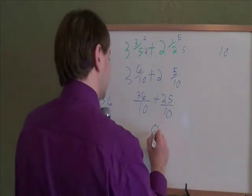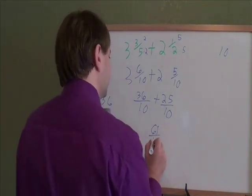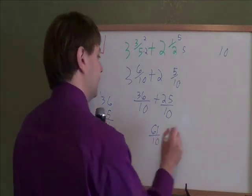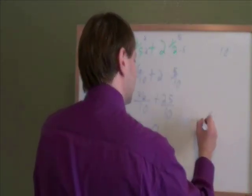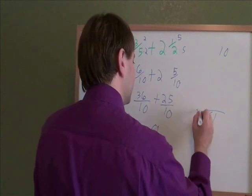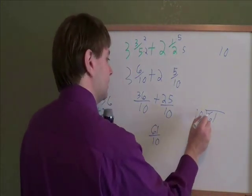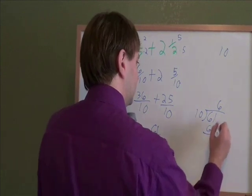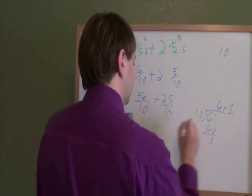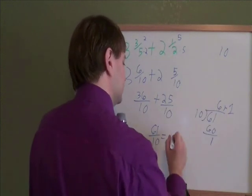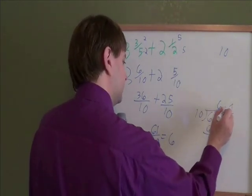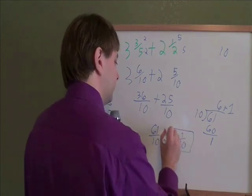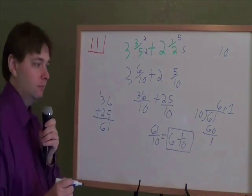So you get 61/10, and then you will need to turn it back into a mixed number. And the way to do that is to divide. You take that 61, and you do the long division dividing it by 10. How many times does 10 go into 60? It goes in 6 times, and has a remainder of 1. So this is just 6, and a remainder of 1 remains over that 10. And that is your final answer, 6 and 1/10.